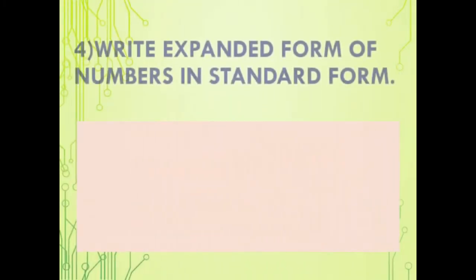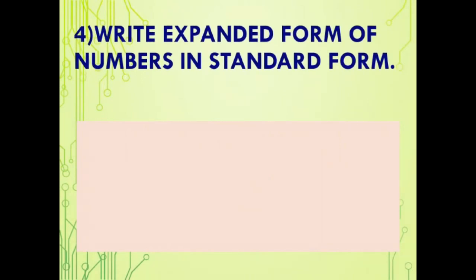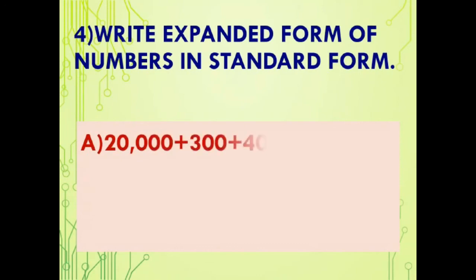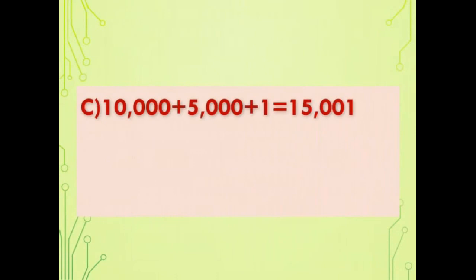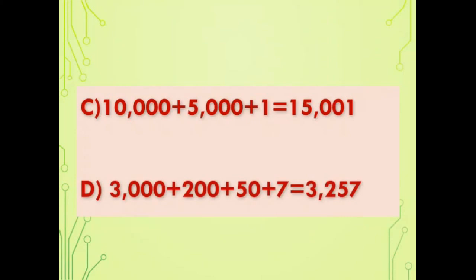4. Write expanded form of numbers in standard form. (a) 20,000 + 300 + 40 + 5 = 20,345. (b) 7,000 + 80 + 3 = 7,083. (c) 10,000 + 5,000 + 1 = 15,001. (d) 3,000 + 200 + 50 + 7 = 3,257.